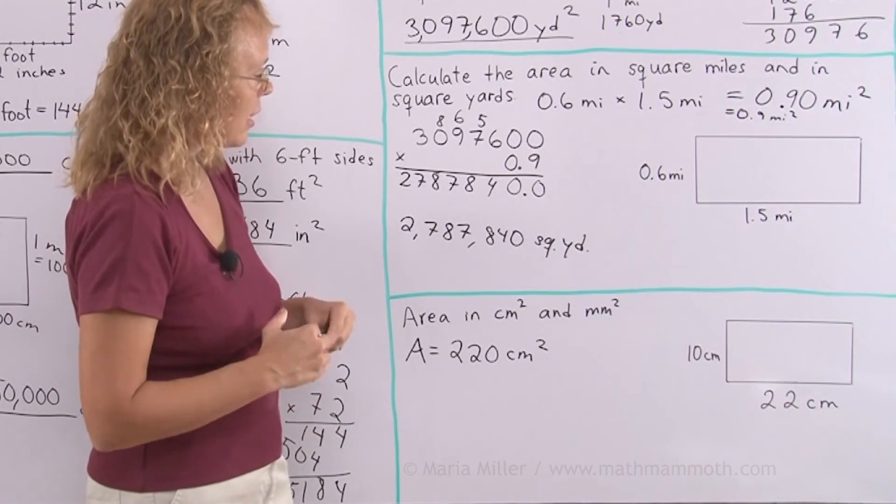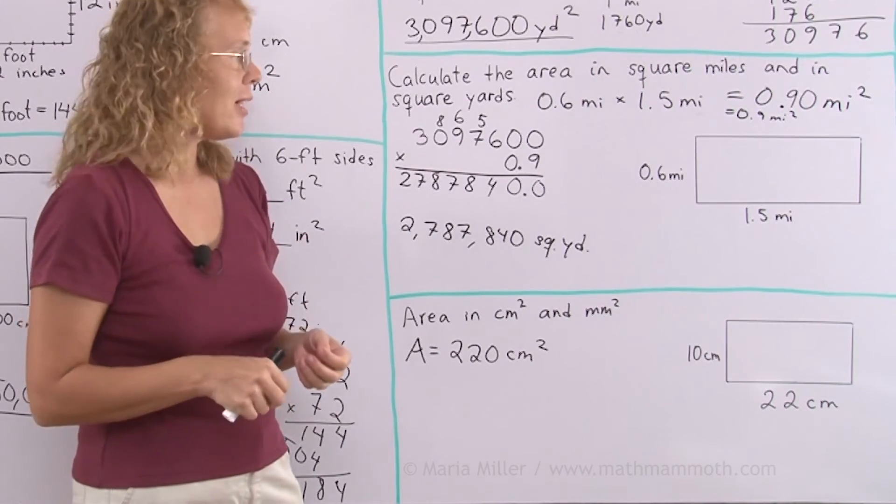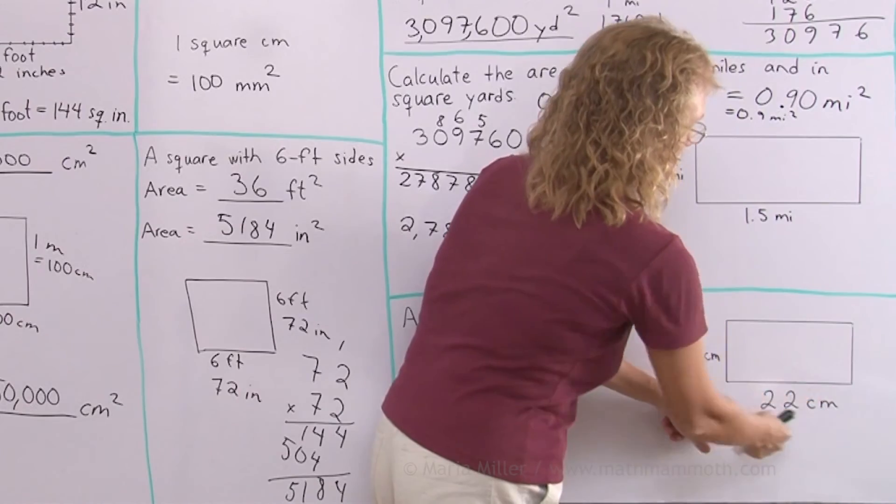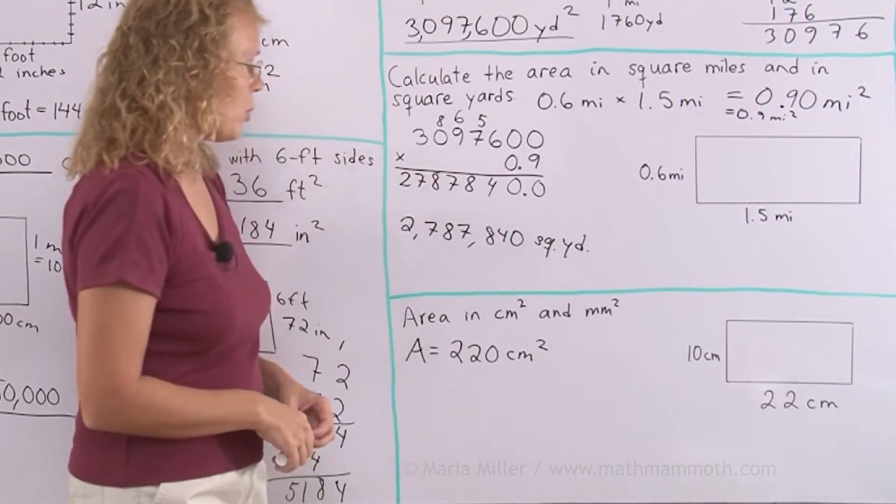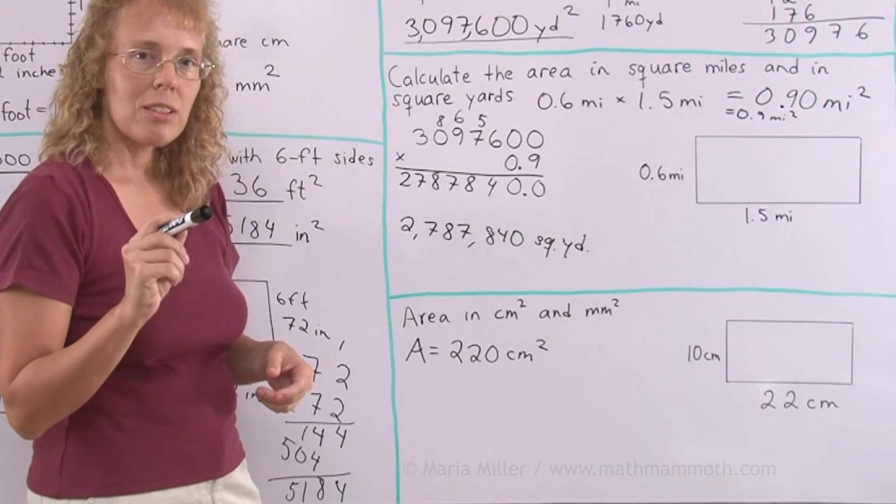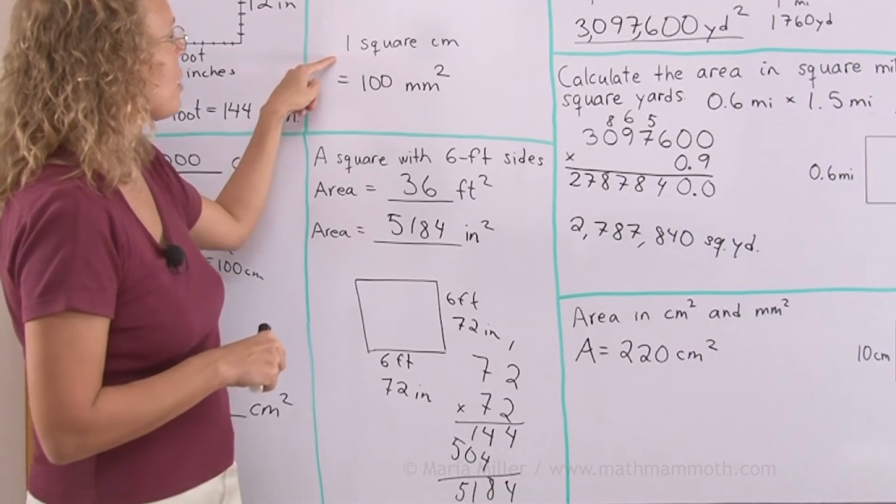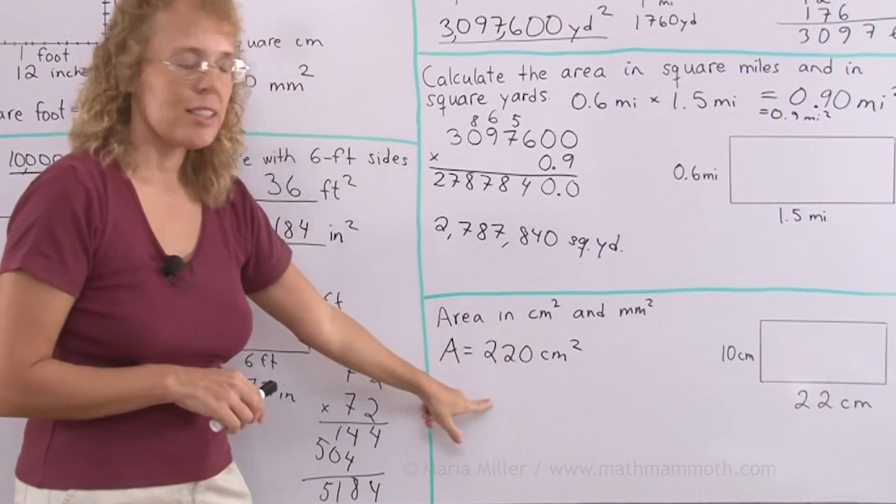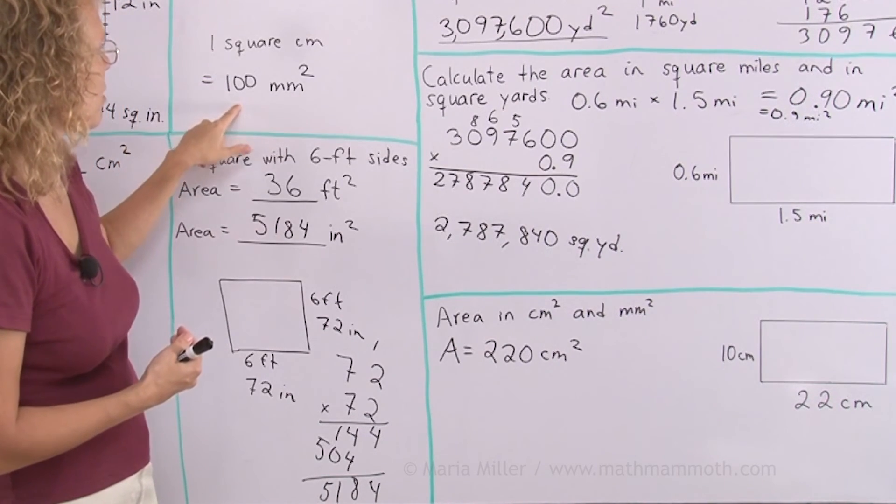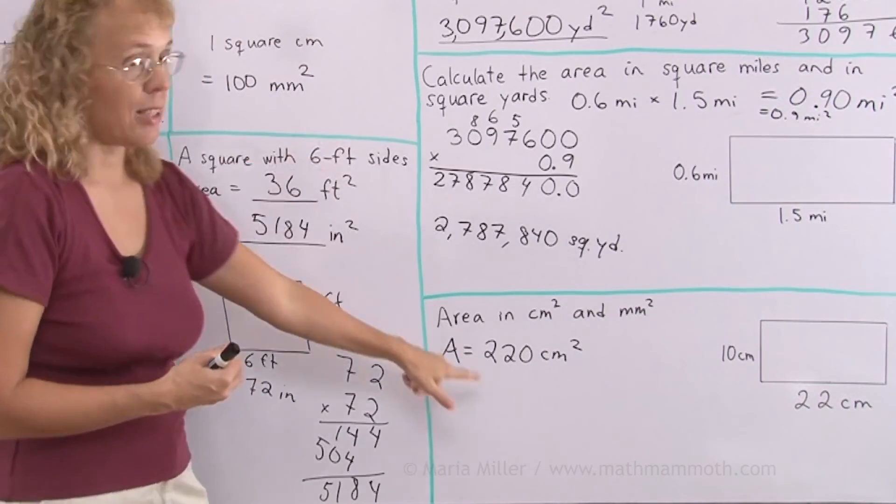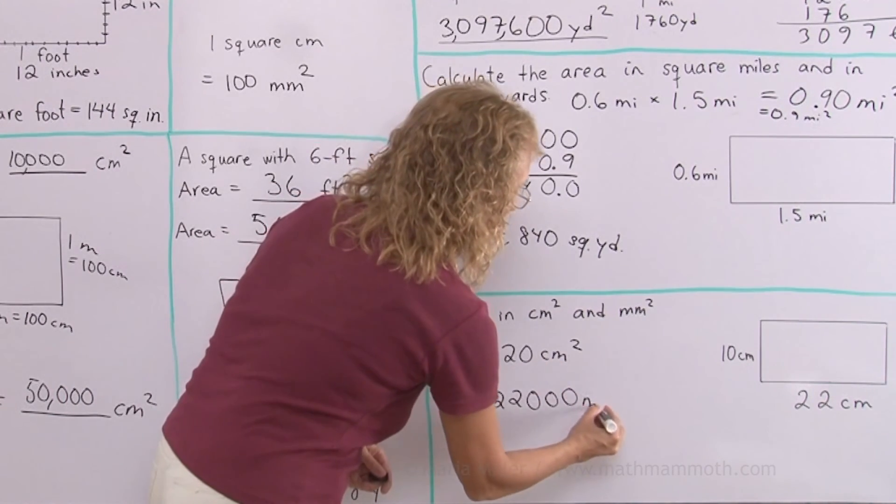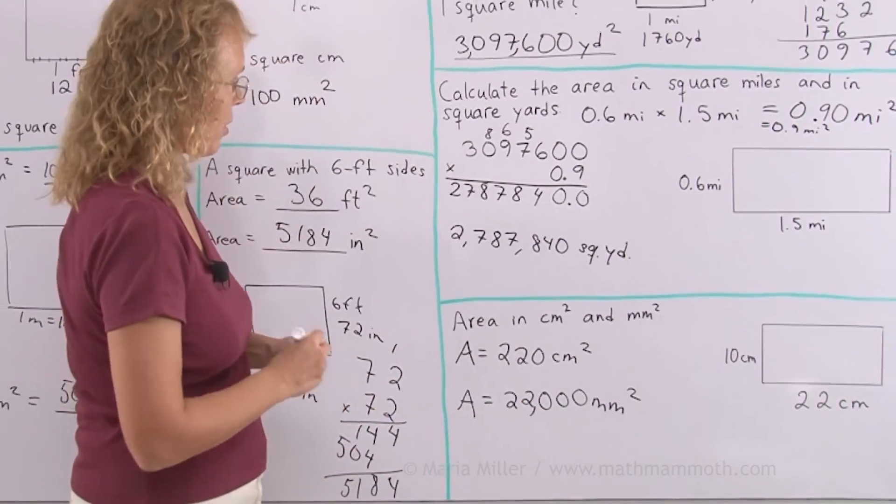Now, what about calculating it in square millimeters? There's actually two ways. Way one is that you first change this to millimeters and this to millimeters, and then multiply those numbers. Way two is to look at this number and then how much was one square centimeter in square millimeters? We solved it here, right? One square centimeter is 100 square millimeters. So I have already the area in square centimeters. I can use this conversion factor to figure the area in square millimeters. One square centimeter is 100 square millimeters, so this many square centimeters is 100 times that. That's pretty easy to do. Just multiply by 100, just tag two zeros there and then you have square millimeters: 22,000.